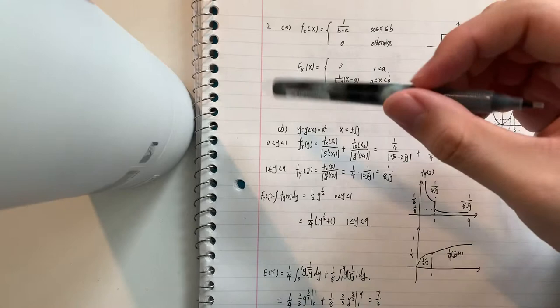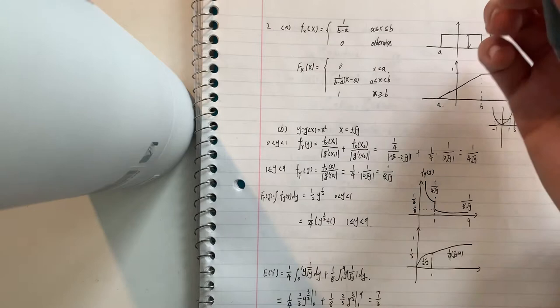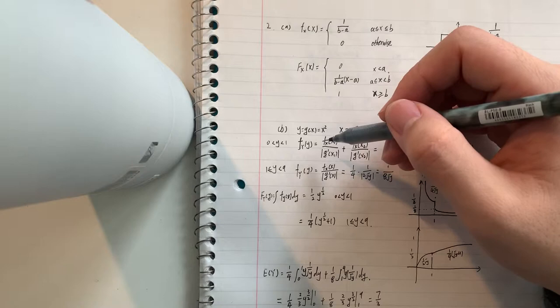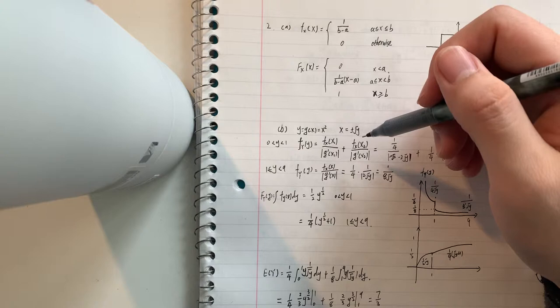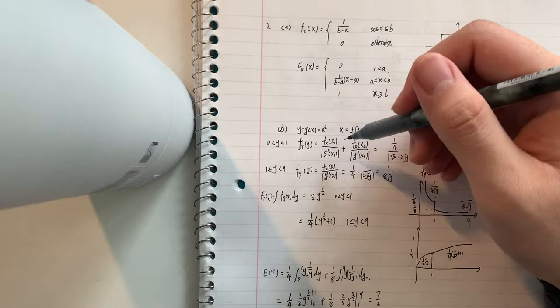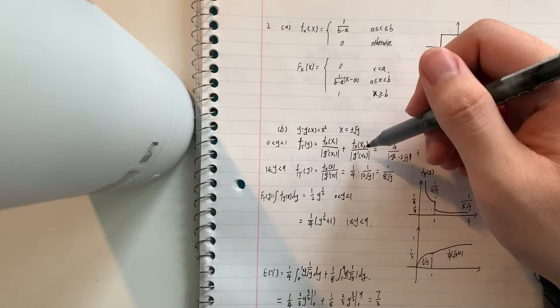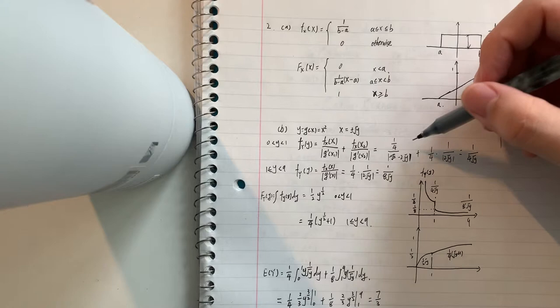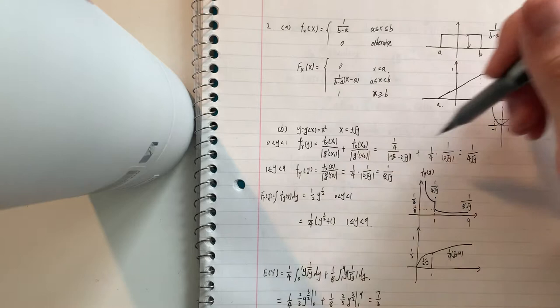First is y larger than 0 and smaller than 1. Then we need to use the function f of y, and f of y is equal to f of x1 divided by the gradient of g x1 plus f of x2 divided by g prime x2. And we plug in, we know that for this part f of y is equal to 1 divided by 4 root of y.